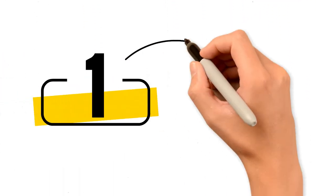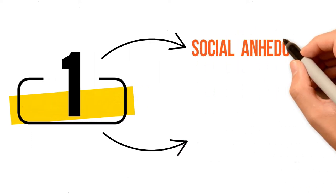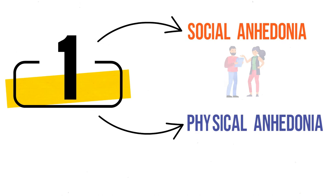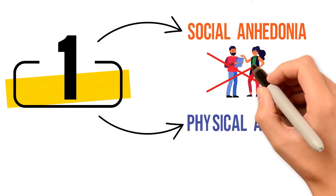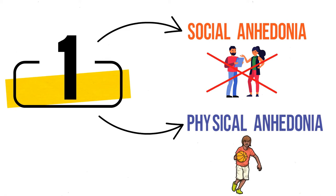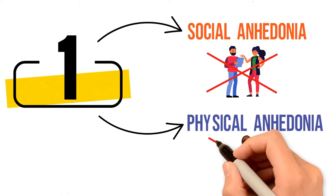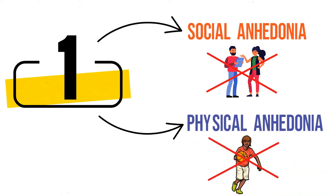Number one: There are two types of anhedonia - social anhedonia and physical anhedonia. Social anhedonia is manifested by an overall disinterest in social situations and engagement. Physical anhedonia is a pronounced inability to feel pleasure from everyday activities. Number two: Depression may reduce the brain's hedonic pleasure capacity.